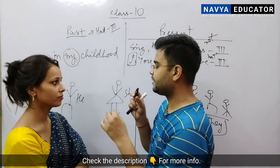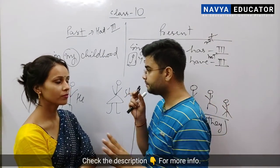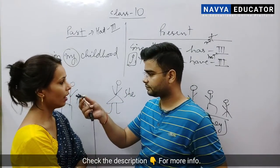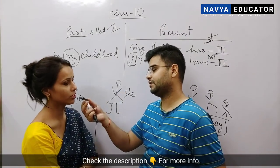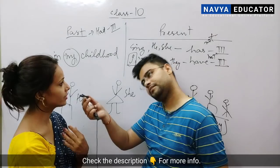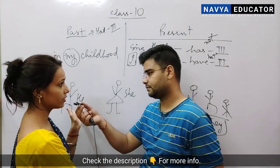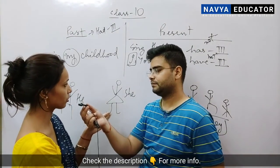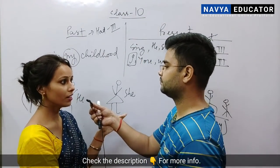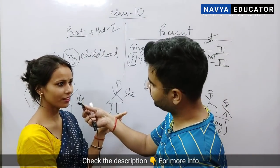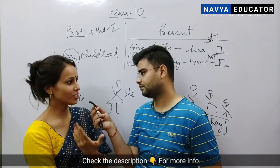Now let's say five sentences. I have done one in my childhood — so you did it, we did it, everyone did it. I had broken my toys in my childhood. You had broken your toys in your childhood. He had broken his toys in his childhood. She had broken her toys in her childhood. They had broken their toys in their childhood. We all had broken our toys in our childhood.